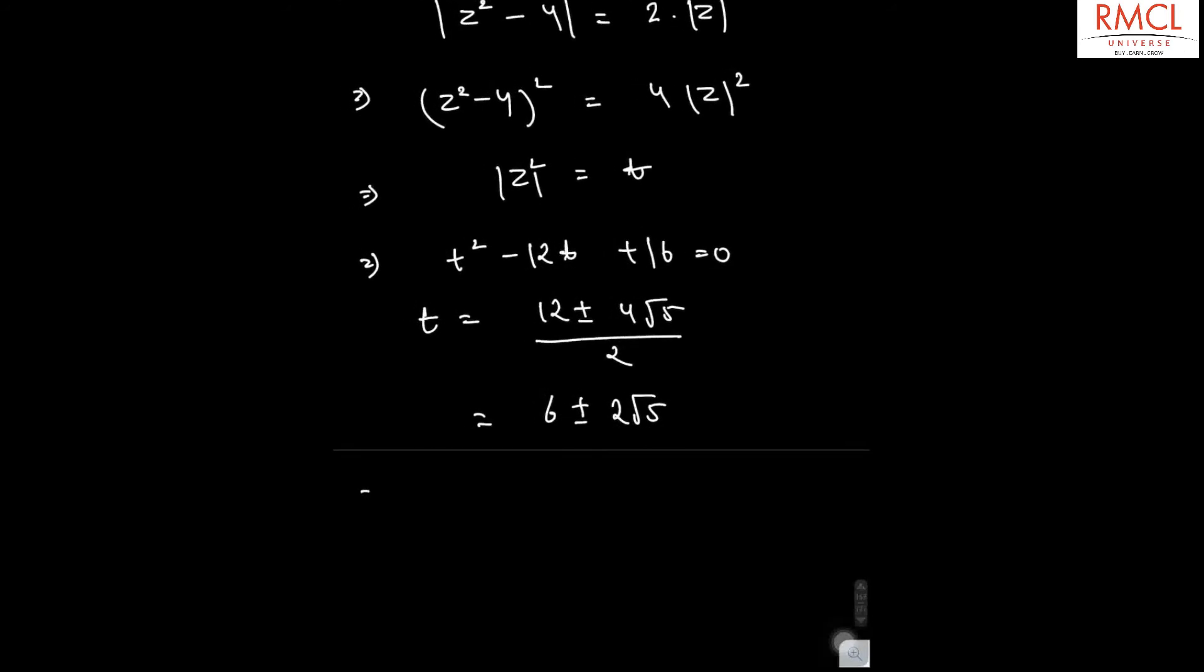And now we know that t is mod z square, and 6 plus minus 2 root 5 can also be written as 1 plus minus 2 root 5 plus 5.